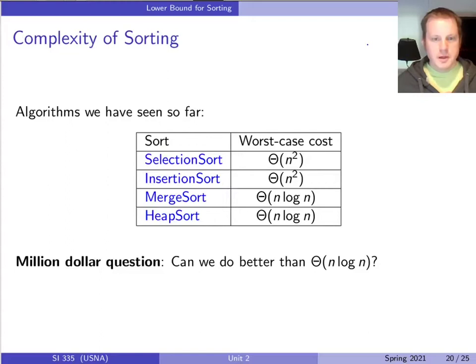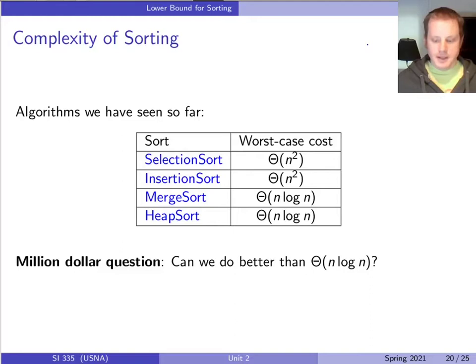We've seen a few algorithms for sorting so far. We've seen selection sort and insertion sort — those are both n squared, quadratic, in the worst case. And then merge sort and heap sort both have this n log n behavior in the worst case, so they're better in terms of their worst case performance.